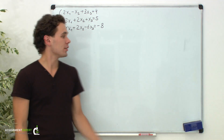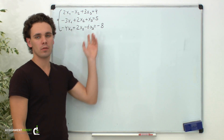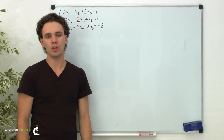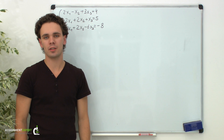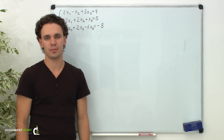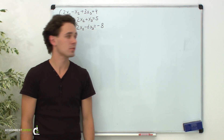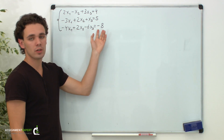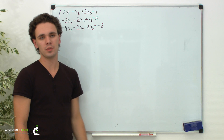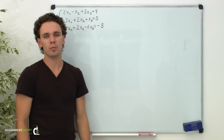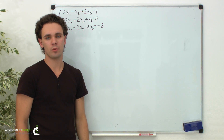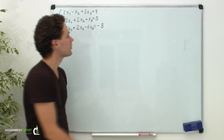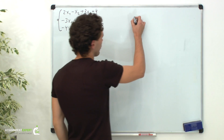Hi. Here we have the system of linear equations. Let's solve it using Gaussian elimination method. First of all, notice that we have non-zero free terms, so we will perform all the operations with augmented matrix. Let's write this matrix.